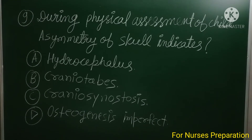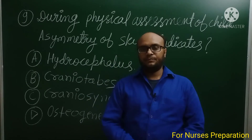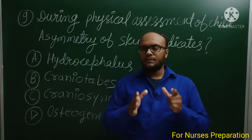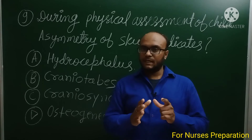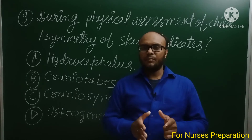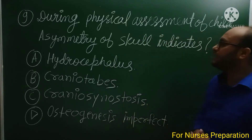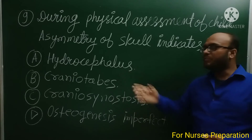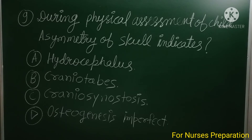Question No. 9: During physical assessment of a child, asymmetry of the skull indicates what? If you are doing a physical assessment of a child and find the skull is asymmetrical — asymmetry meaning the two halves are not equal — what does this indicate? Option A: Hydrocephalus, Option B: Craniotabes, Option C: Craniosynostosis, Option D: Osteogenesis imperfecta.